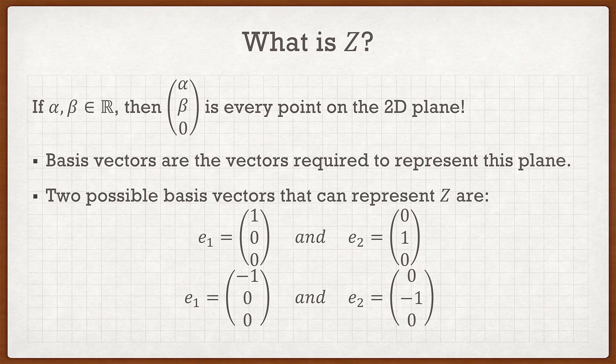And then for the second one I can just do the opposite, where I want e₁ is (-1,0,0) and e₂ is (0,-1,0). So that kind of concludes this.